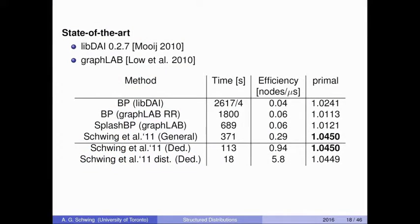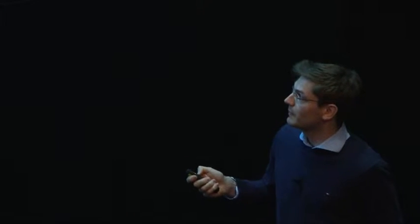When comparing to state-of-the-art, we compared to a library for discrete approximate inference as well as GraphLab — now a famous company in Seattle. I'm showing run time in seconds alongside baseline methods and our general implementation, more or less to show that our implementation does something decent. Importantly, we are also able to get a good primal value — since we are maximizing, higher is better. If we distribute our problem onto multiple machines, we can improve performance even further while not significantly harming the primal value.